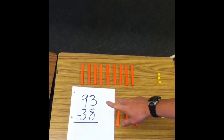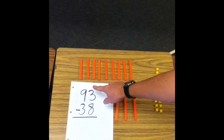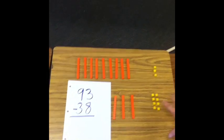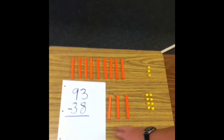So I've represented that with blocks. I have 9 tens and 3 ones, or 93. And then this is what I have to take away. I have to take away 38, so 3 tens and 8 ones.